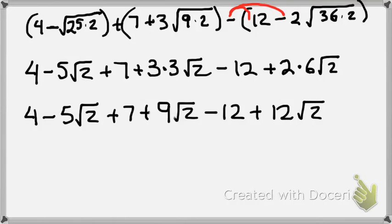Combine like terms. So 4 is the first number, it's an integer, so let's add all of our integers together.